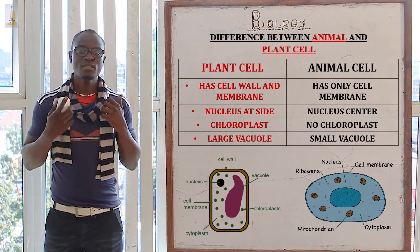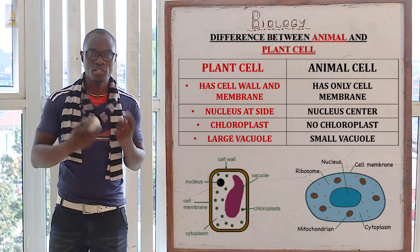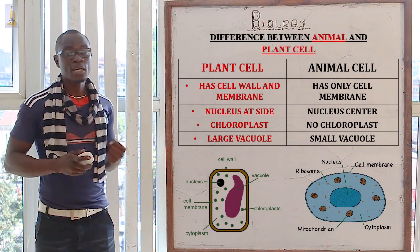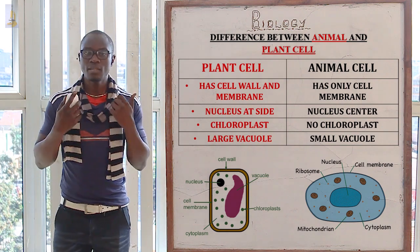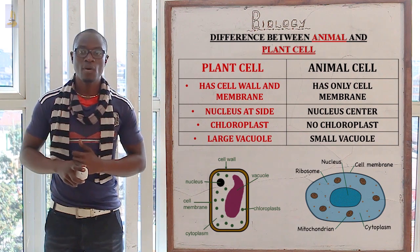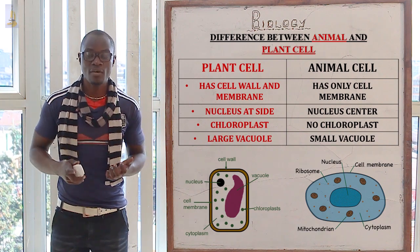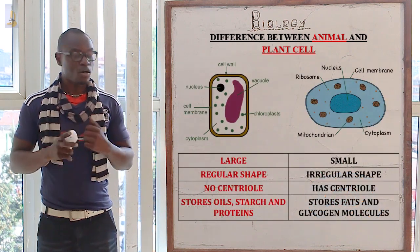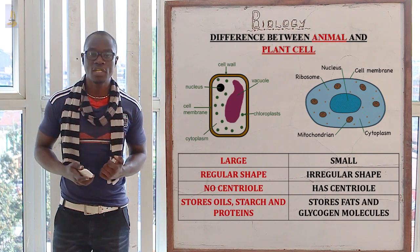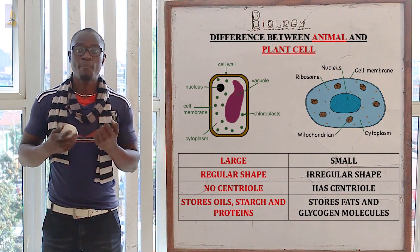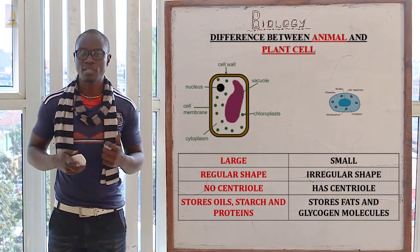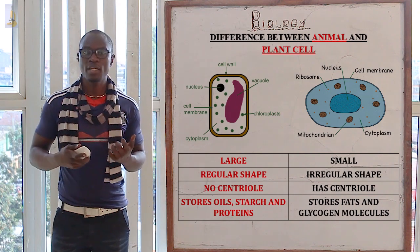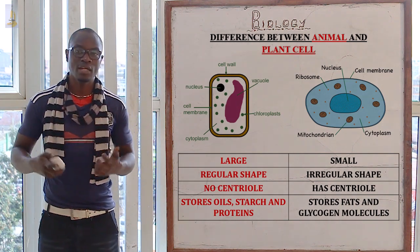In the plant cell, cells have chloroplasts for photosynthesis while the animal cells do not have any chloroplast. Looking at the vacuole, the plant cell has a very large vacuole while the animal cell doesn't have a vacuole, and if a vacuole is present it will be very small. Morphologically, the plant cell is very large while the animal cell is always very small. The plant cell is regular-shaped while the animal cell is irregularly shaped.